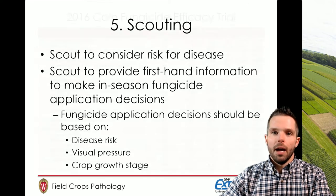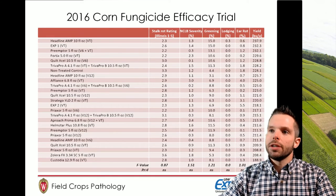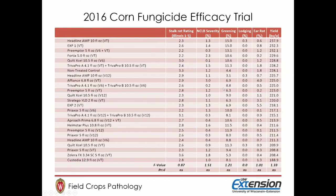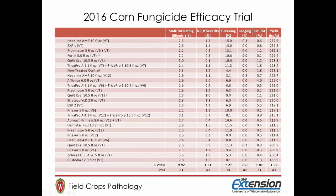Each year we run fungicide trials here in Wisconsin, usually at the Arlington Agricultural Research Station. You'll see a number of foliar fungicides applied at different growth stages on corn: VT indicates application at tasseling, V6 would have been at the vegetative growth stage earlier in the season, and there are also V12 or two-pass applications. We rate these plots for various diseases each year and other traits including lodging, greening, ear rot, and of course yield. In the 2016 trial, when we look at the statistics, we didn't have any statistically significant differences for any of the ratings, though we did see a wide range of yields from high to low.